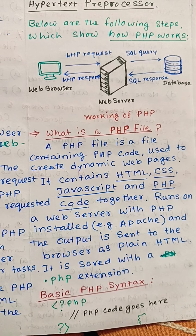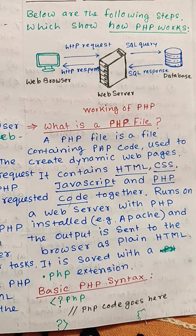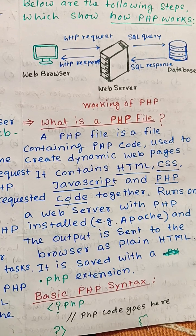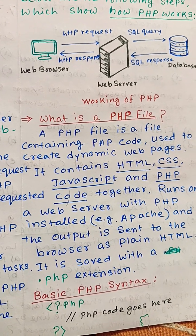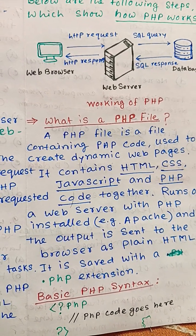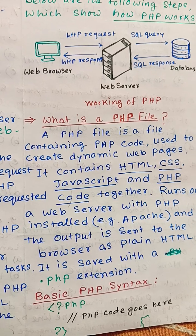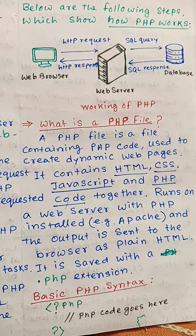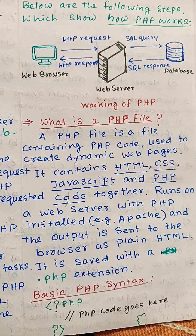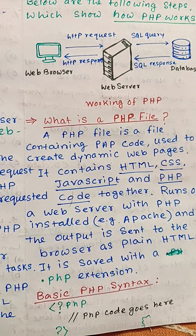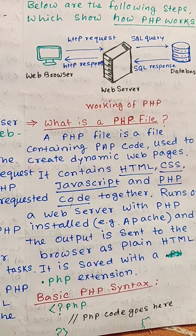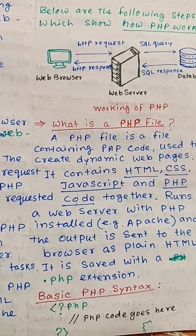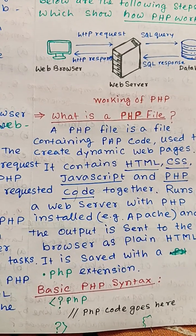What is a PHP file? A PHP file is a file containing PHP code used to create dynamic web pages. It contains HTML, CSS, JavaScript, and PHP code together. It runs on a web server with PHP installed, such as Apache, and the output is sent to the browser as plain HTML. It is saved with a .php extension.